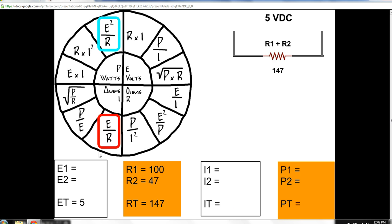I can use power, the square root of power divided by resistance. Well, I don't have power, so I can't use that. Power divided by voltage. Again, I don't have power, so I can't use that. Voltage divided by resistance. Voltage divided by resistance. So, I can use this one to solve for amps.